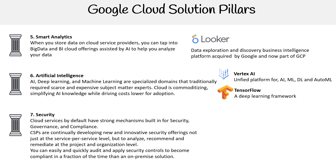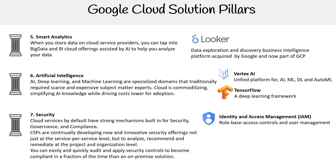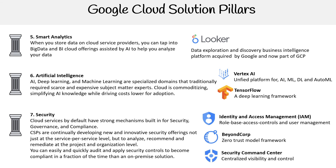Then we have security. Cloud services by default have strong mechanisms built in for security governance and compliance. CSPs are continually developing new and innovative security offerings, not just at a service-per-service level, but to analyze, recommend, and remediate at the project and organization level. You can easily and quickly audit and apply security controls to become compliant in a fraction of the time compared to an on-premise solution. Things you get when working in the cloud include IAM — role-based access controls and user management. One that Google has is BeyondCorp, a zero trust model framework. There's also the Security Command Center, which centralizes visibility and control for security and misconfigurations. This helps ground each of these pillars into something practical.